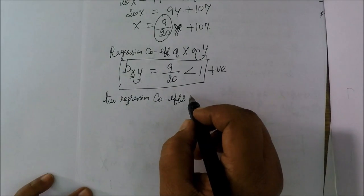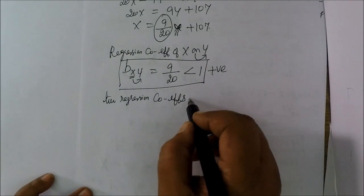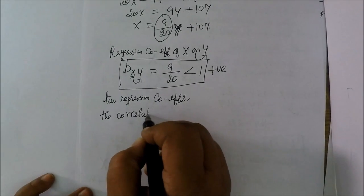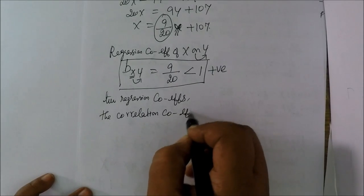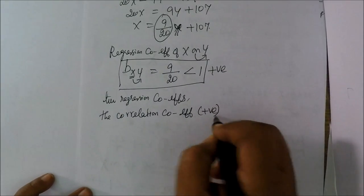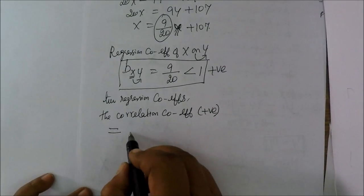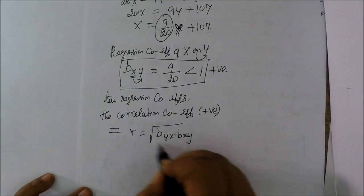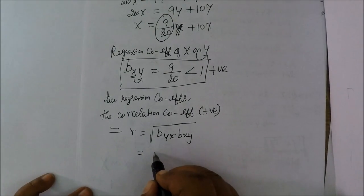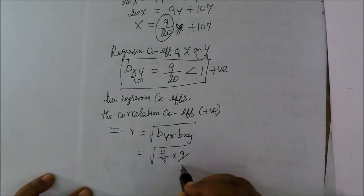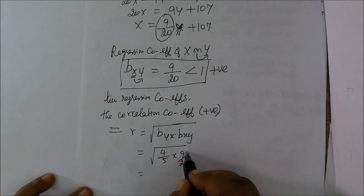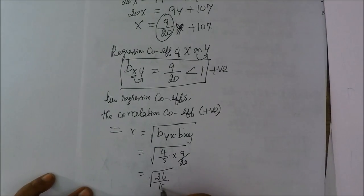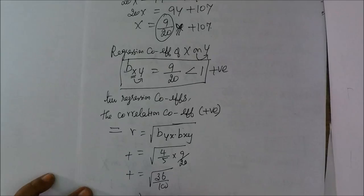We will combine the correlation coefficient. How will n be positive? The formula is the square root of byx into bxy. That is equal to the square root of 4 by 5 into 9 by 20, which equals 36 by 100, that is 6 by 10, equal to 0.6.